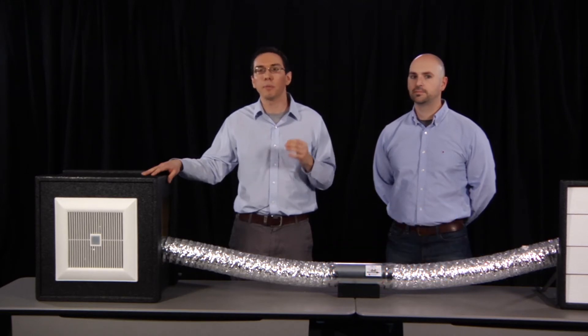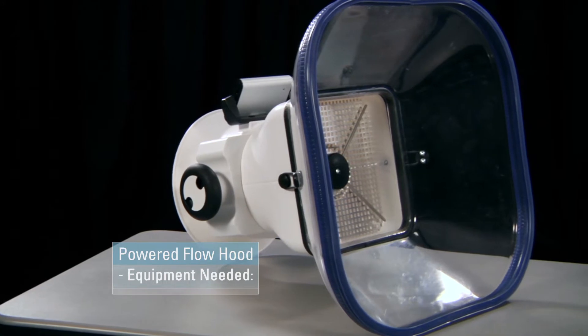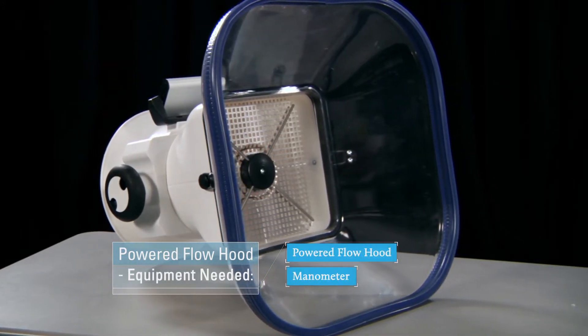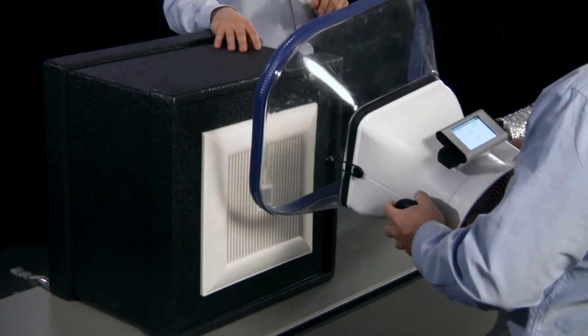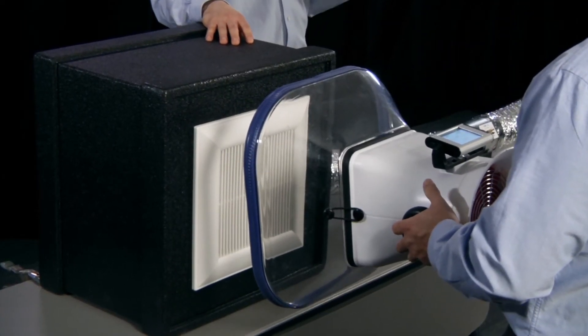First, James will show you a powered flow hood. For this, you'll need just two items: the powered flow hood itself and a manometer. In this case, the manometer is built right into the equipment. For all of these tests, be sure to check the ResNet standard for the required accuracy of the equipment.